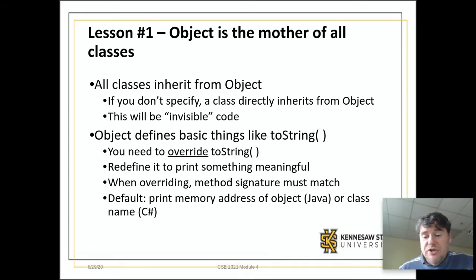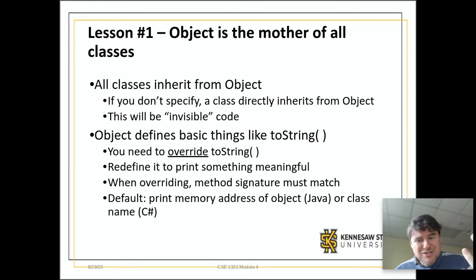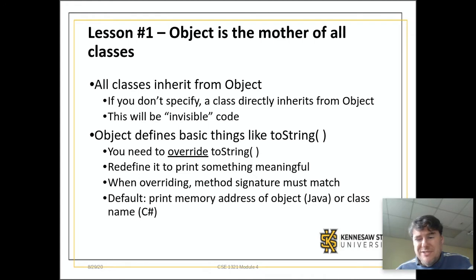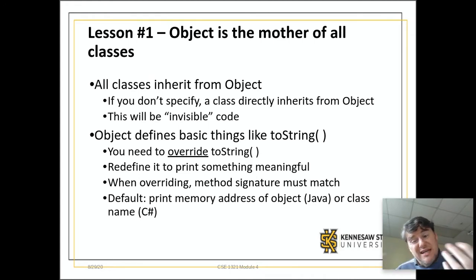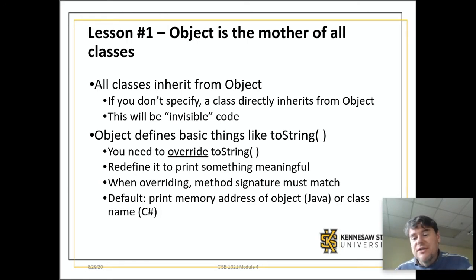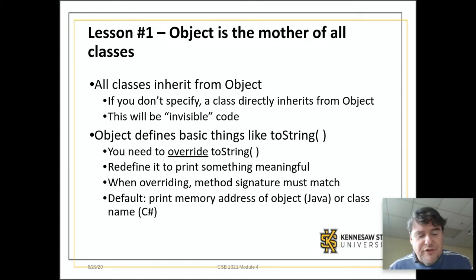What toString does is it takes the object and converts it into a string automatically. The default in both Java and C# for exactly what that does are slightly different, but in both cases it returns the name of the class. In Java it will also give you the memory location, though that's not particularly useful.